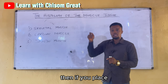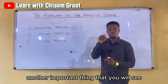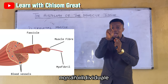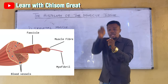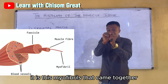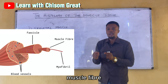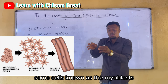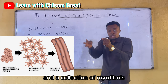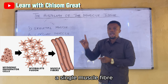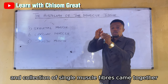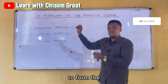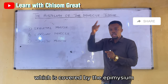If you place a single muscle fiber under a microscope, you will notice the presence of individual longitudinal myofibrils. A single muscle fiber contains many myofibrils, and it is these myofibrils that came together to form a single muscle fiber. They were formed as a result of cells known as myoblasts coming together. A collection of myofibrils gives rise to a single muscle fiber, a collection of muscle fibers forms a bundle or fascicle covered by the perimysium, and a collection of fascicles forms the whole muscle covered by the epimysium.